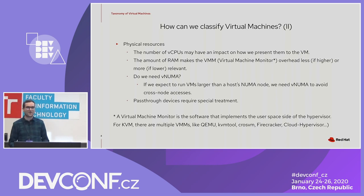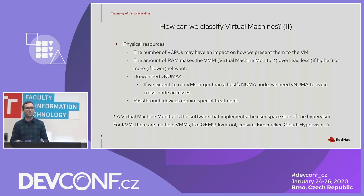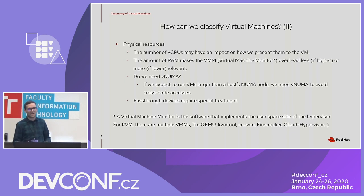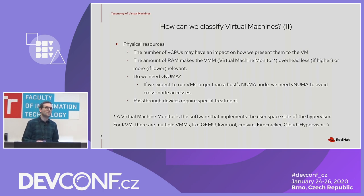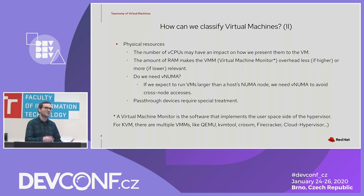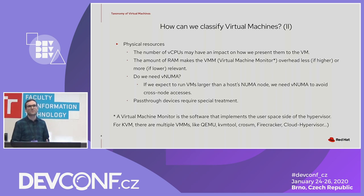We also care about the physical resources the virtual machine requires. The number of vCPUs may impact how we present them to the VM. The amount of RAM also makes the virtual machine monitor overhead more or less relevant. For example, if I'm running a 32-gigabyte VM and my VMM requires an additional gigabyte for its own purposes, that's not a big deal — but if I plan to run many small VMs with one or two gigabytes of RAM and my monitor still requires an additional gigabyte, then I have a problem.